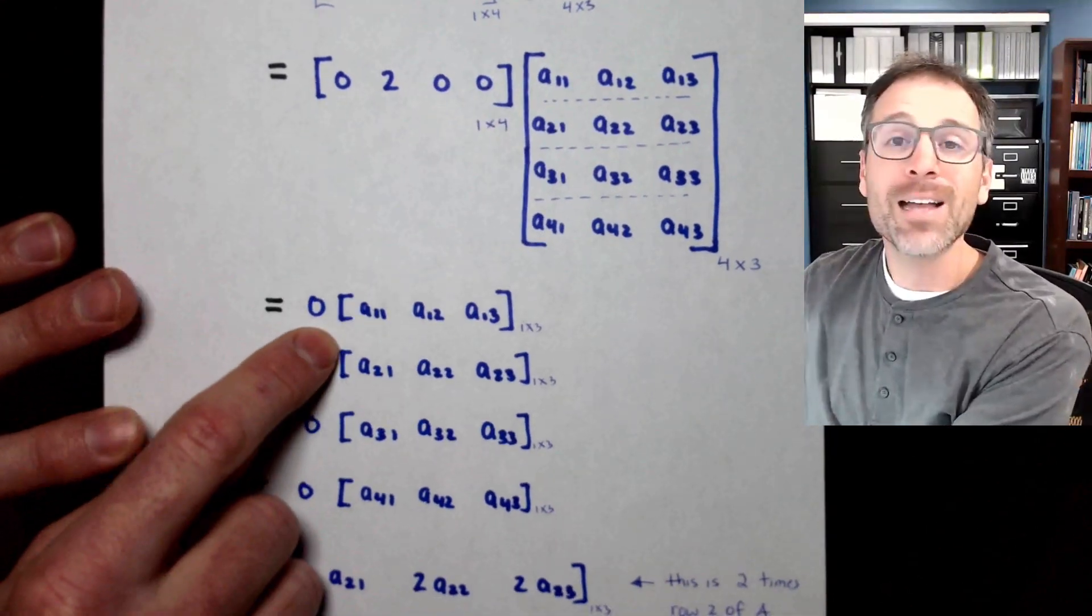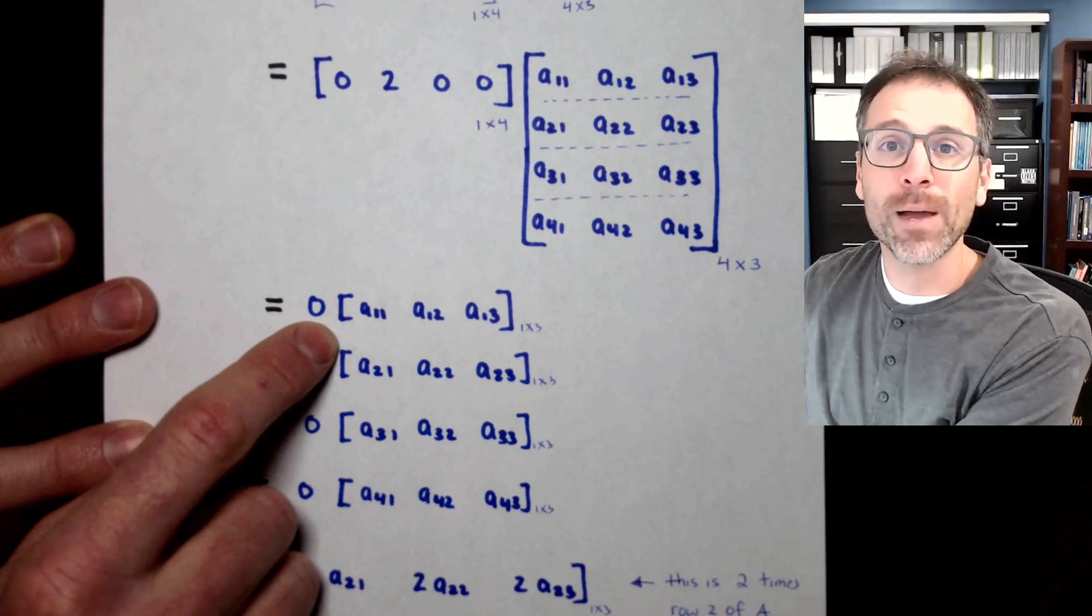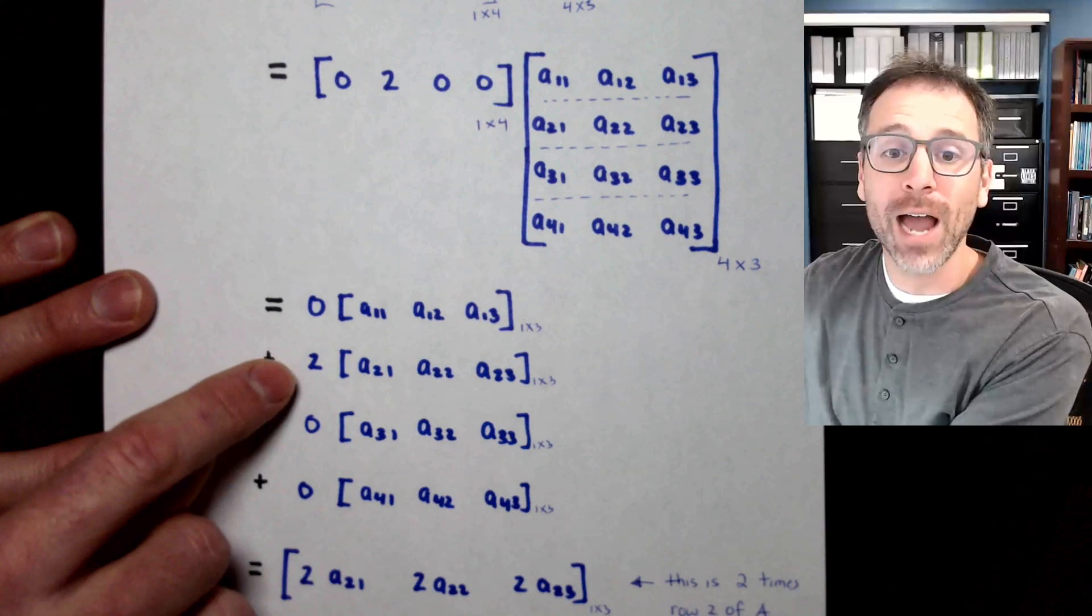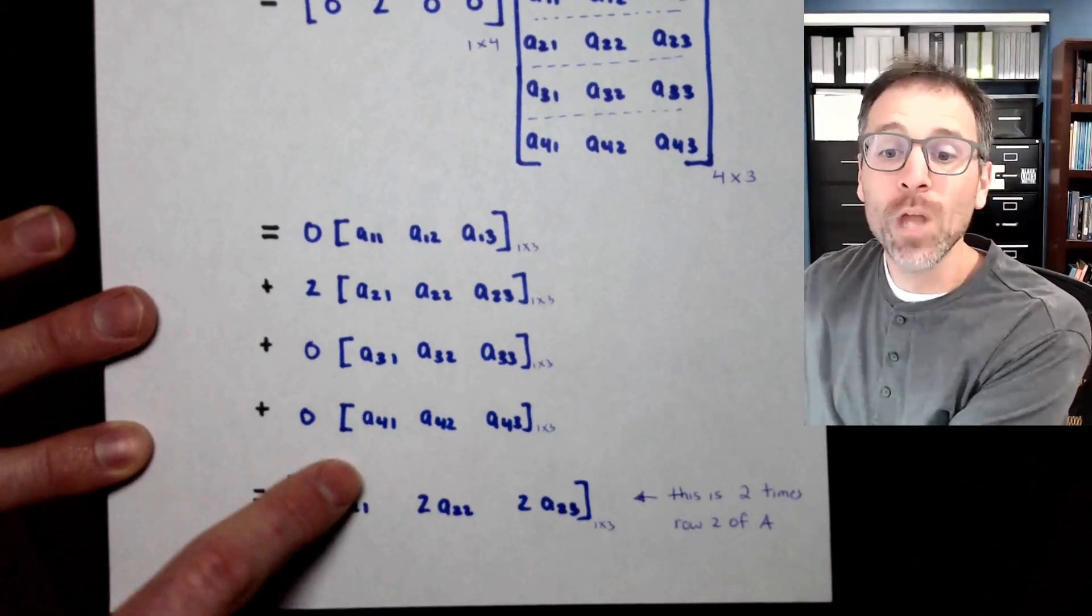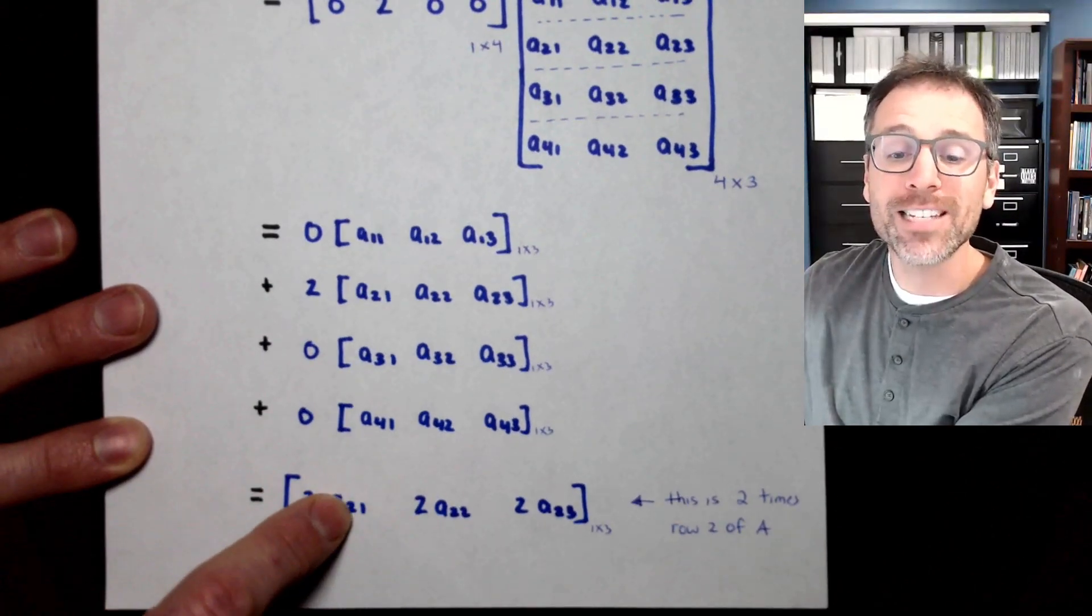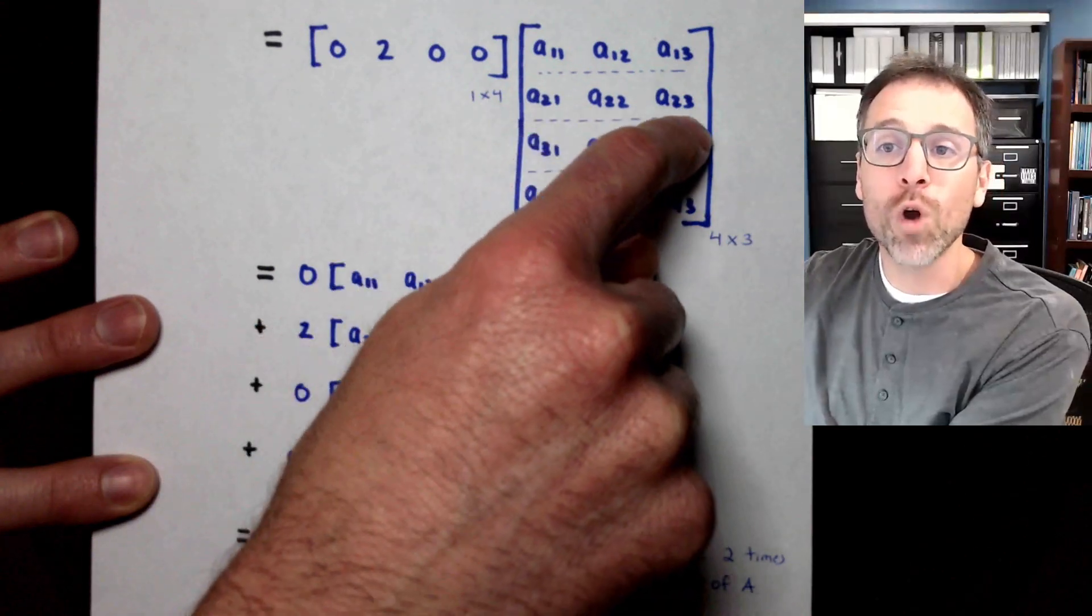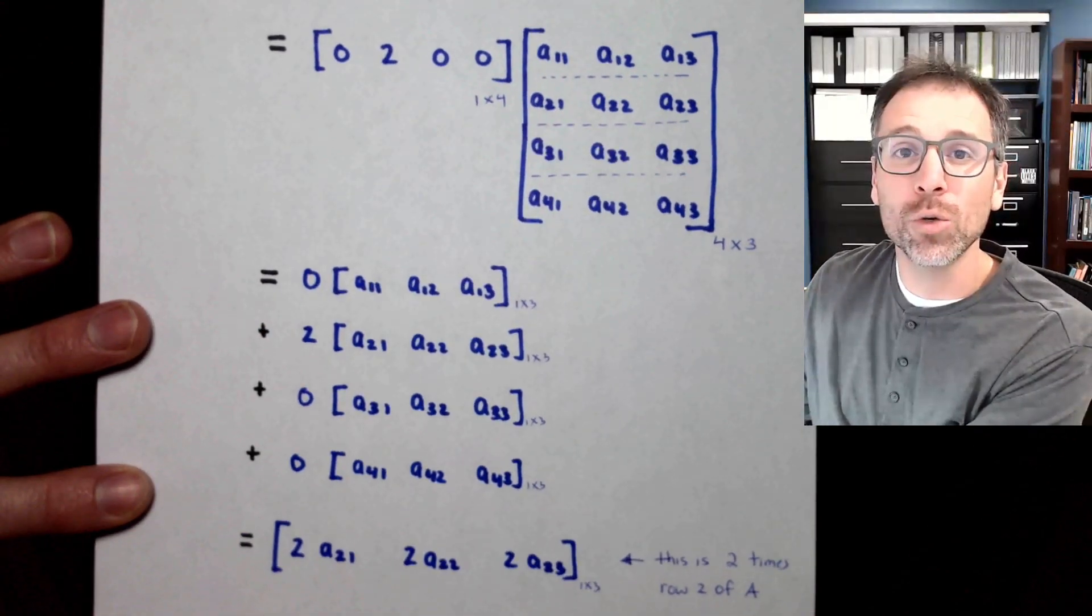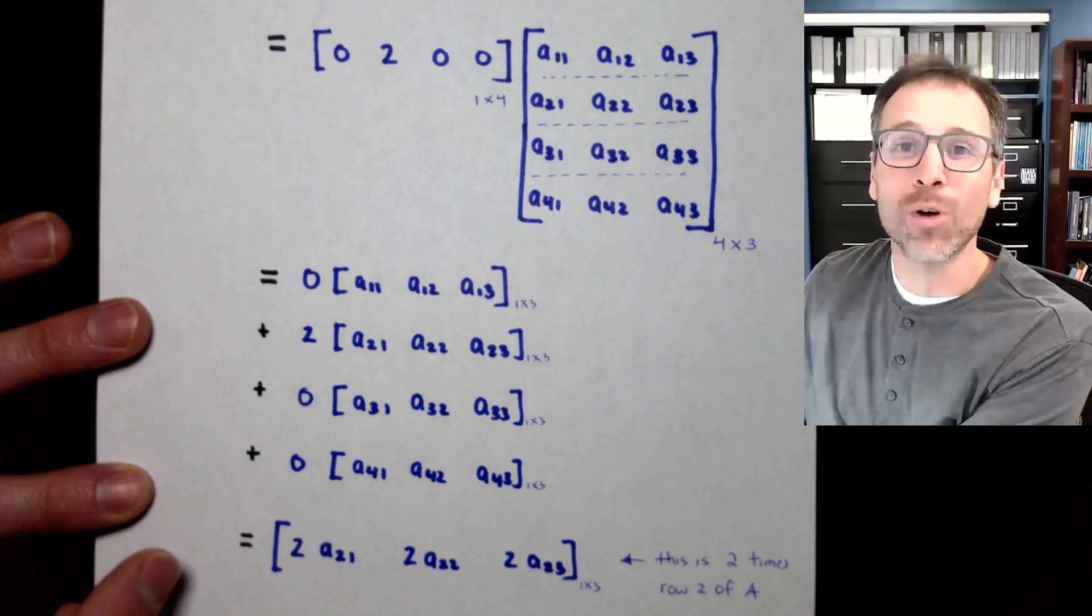I add all those up. 0 is one of my favorite things to multiply by because I don't have to do shit. So here we go. So all of those disappear and I have 2 times row 2, which is exactly what I see here. This is 2 times the original row 2 of our modeling matrix. In other words, I've scaled the second row by 2 and put the result in the second row of my product.